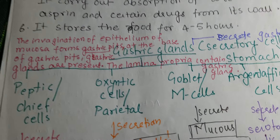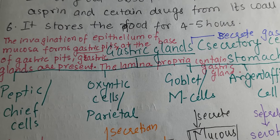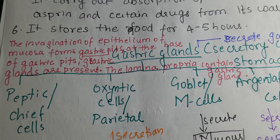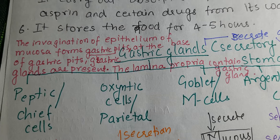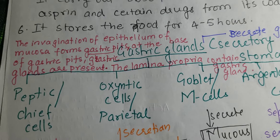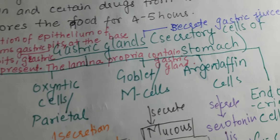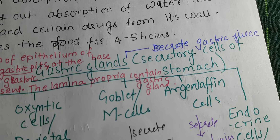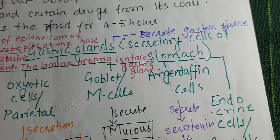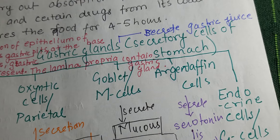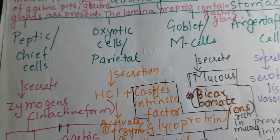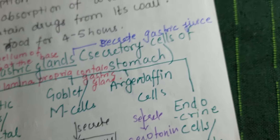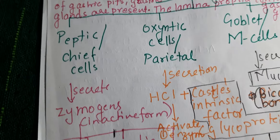The stomach stores food for four to five hours. Regarding gastric glands: invaginations of the epithelium of the mucosa form gastric pits, and at the base of these gastric pits, gastric glands are present. The lamina propria contains gastric glands located in the mucosa. The secretion of gastric glands is called gastric juice. The glandular cells include peptic cells, oxyntic (parietal) cells, goblet (mucus) cells, argentaffin cells, and endocrine (G) cells.